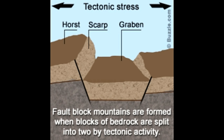The Earth is completely dependent on the unpredictable tectonic forces working underneath its crust. Tectonic forces can create a new island, or submerge an existing one, or form a new mountain range out of the blue. Fault blocks, and the mountains that they consequently form, are the perfect example of the immense power of tectonic forces.